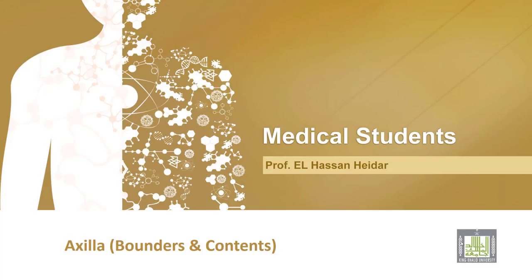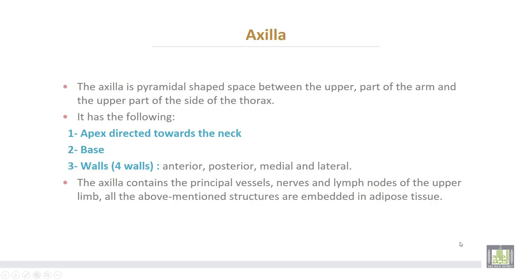Axilla: Boundaries and Contents. The axilla is a pyramidal shaped space between the upper part of the arm and the upper part of the side of the thorax.